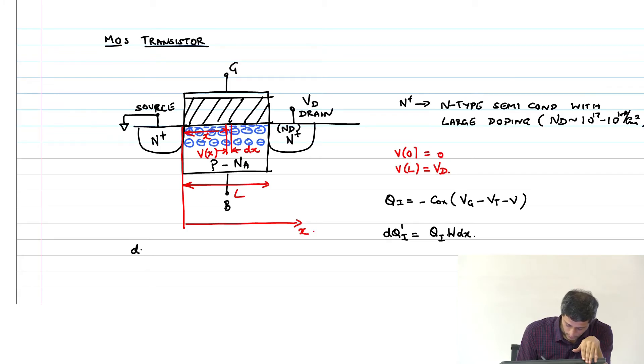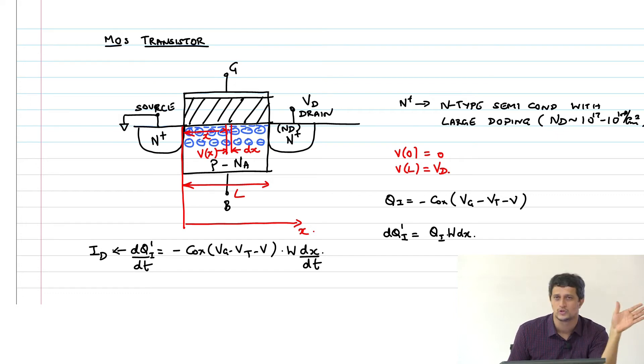Therefore, if you look at the elemental charge dq - this is qi actually because I want the charge per unit area - the dqi prime should be what? It is just qi prime into the area element. What is the area element? W into dx. So I have dqi prime is minus Cox into Vg minus Vt minus V into w times dx. I just differentiate with respect to time. This has to be a current and this is called a drain current. Equation of continuity says that the drain current has to be the same through the channel, it cannot be different. It is not going to depend on the position, otherwise you will have charge accumulating in one place.